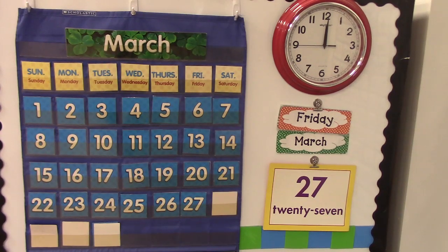Look at the clock beside the calendar. What time does it say? Both the minute hand and the hour hand are pointing to 12. That means it's 12 o'clock. It might not be 12 o'clock at your house, but it was when I made this video. Have a good day!